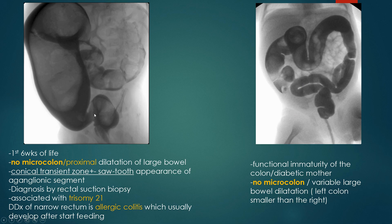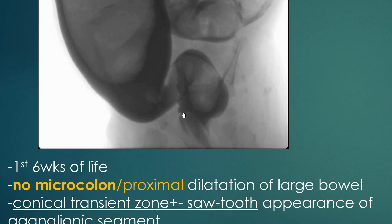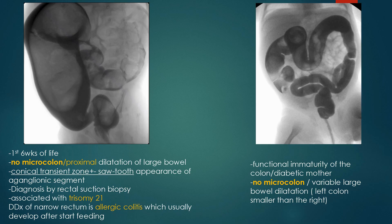In Hirschsprung's disease, we see a reversed rectosigmoid ratio — the rectum is much smaller than the sigmoid, which is the reverse of normal. We can also see a transitional zone between the small and dilated segment, and if we zoom in, we can see the sawtooth appearance in the aganglionic segment.